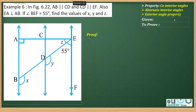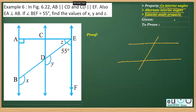I'm going to solve example six from the textbook based on three properties: co-interior angles, alternate interior angles, and exterior angles. Co-interior angles are when two lines are drawn and the interior angles on the same side of the transversal are supplementary. Alternate interior angles: when two lines are parallel, this angle is equal to this angle, and the other pair as well — this is called alternate interior angles.